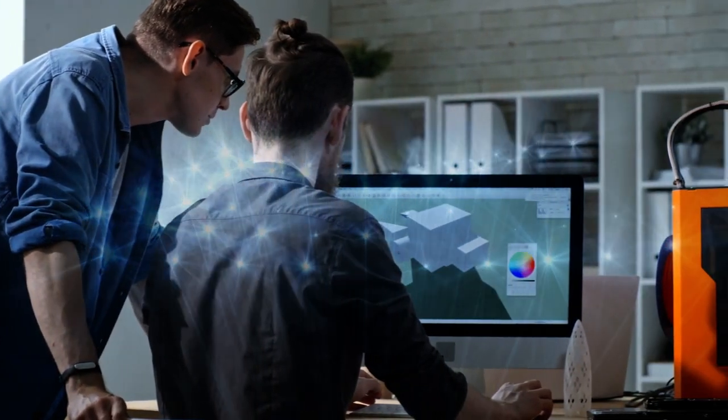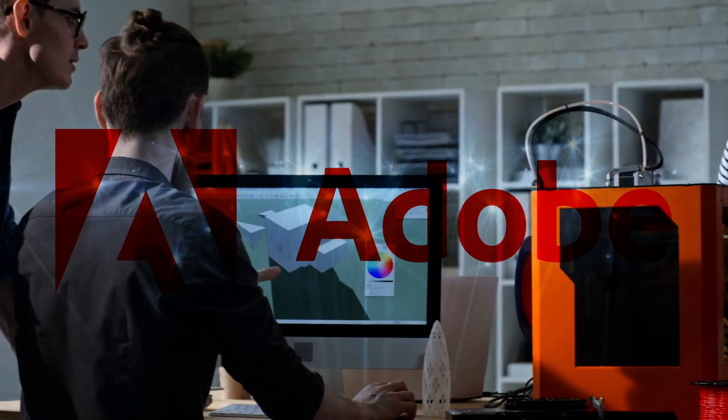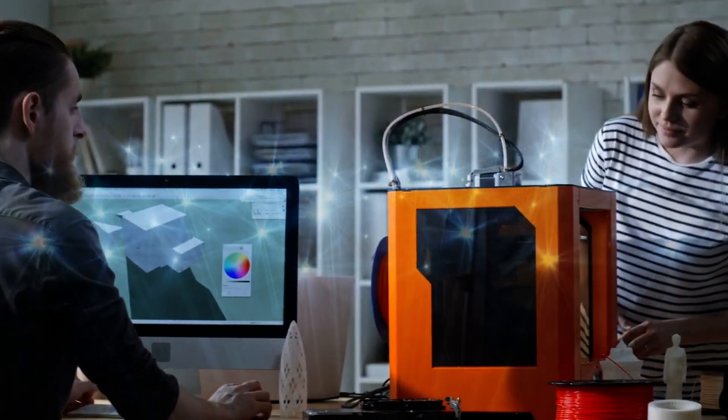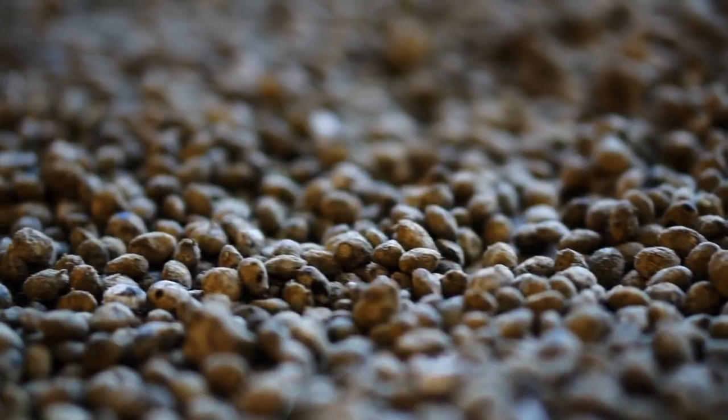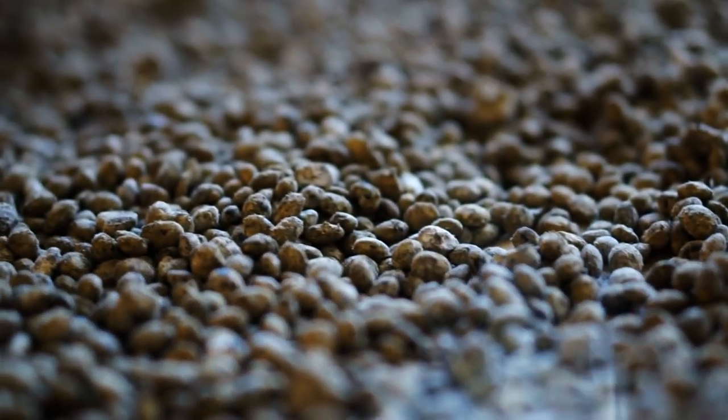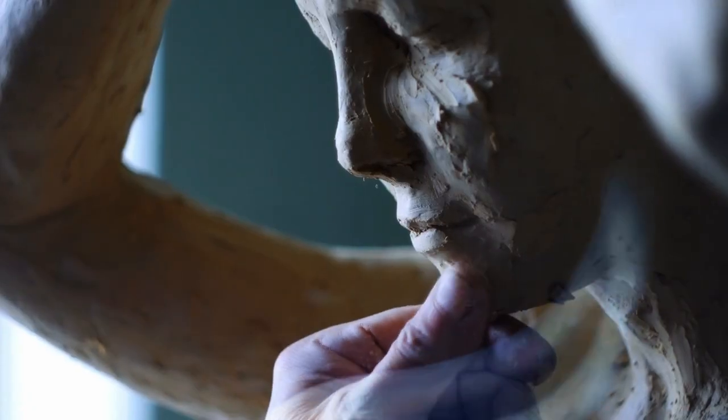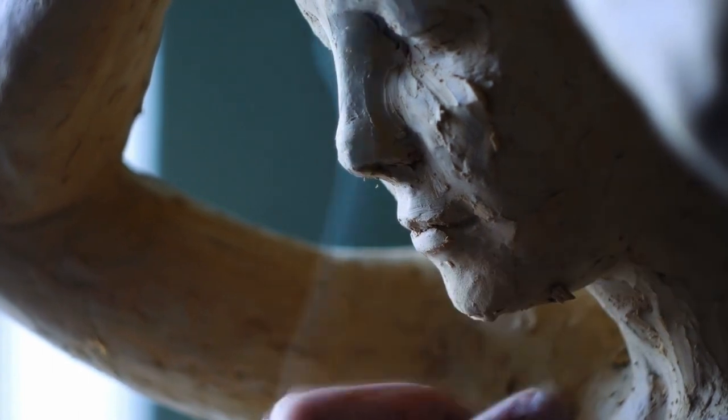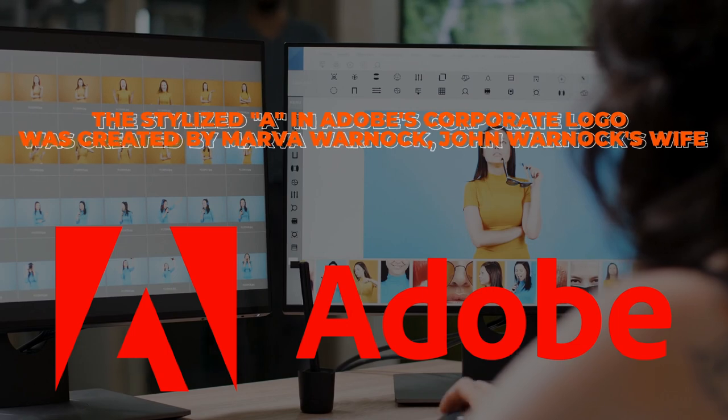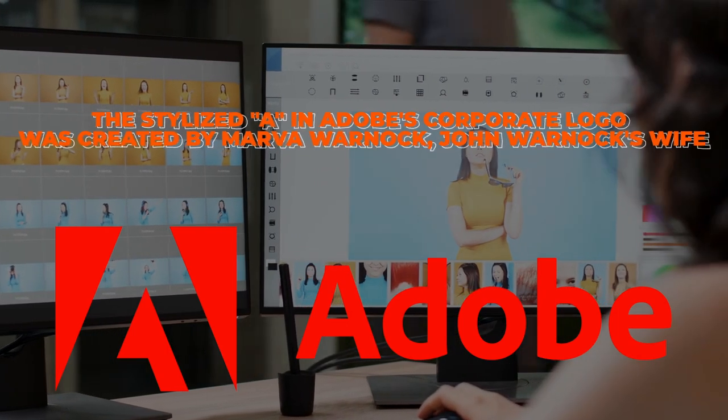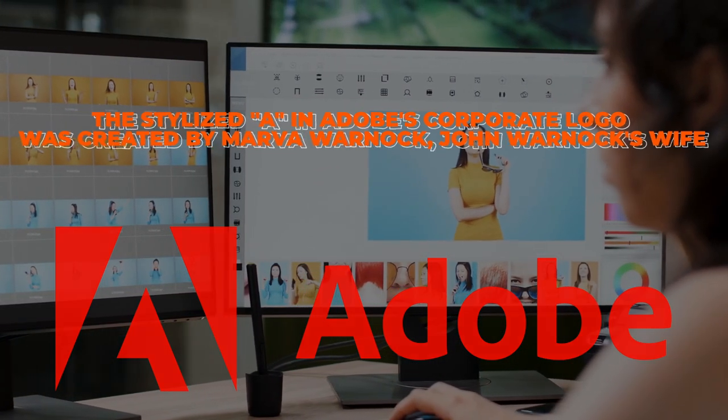So John and Charles started a company called Adobe Systems Incorporated. The company's name, Adobe, was inspired by the Los Altos, California creek that ran behind Warnock's home. The creek was named after a type of clay that was found there, and this clay symbolizes the creative nature of the company's products. The stylized A in Adobe's corporate logo was created by Marva Warnock, John Warnock's wife, who was also a graphic designer.